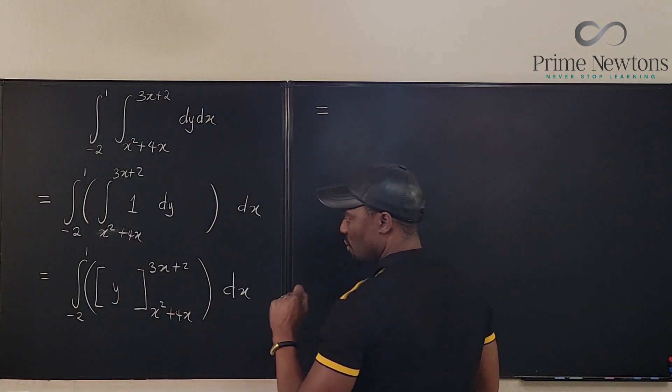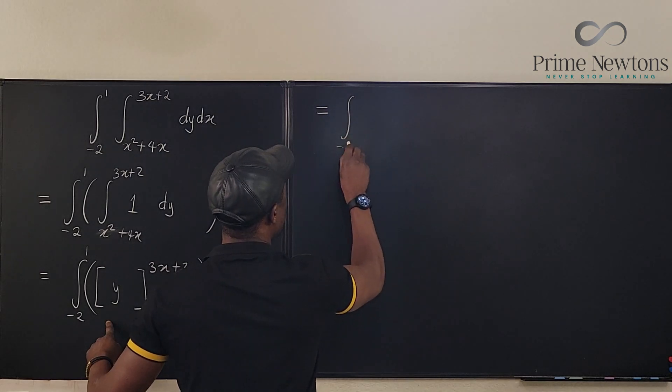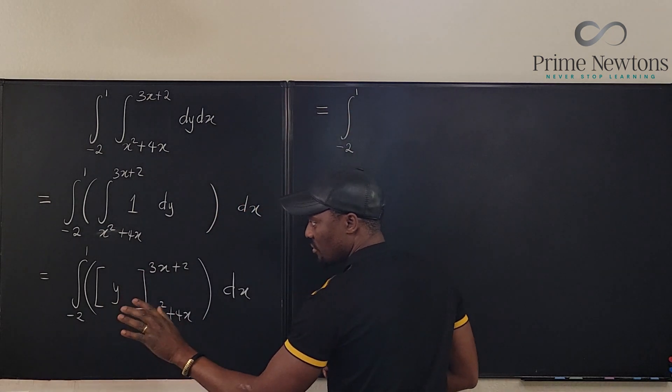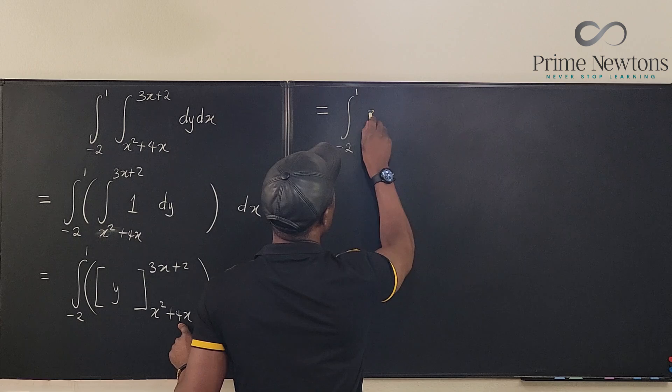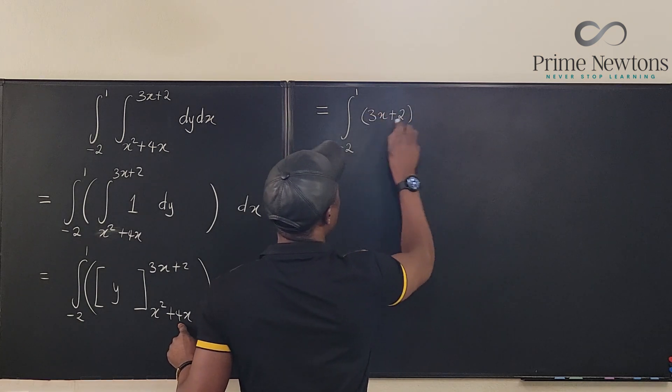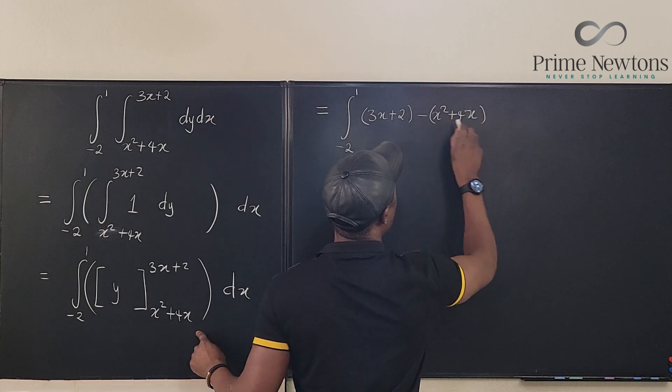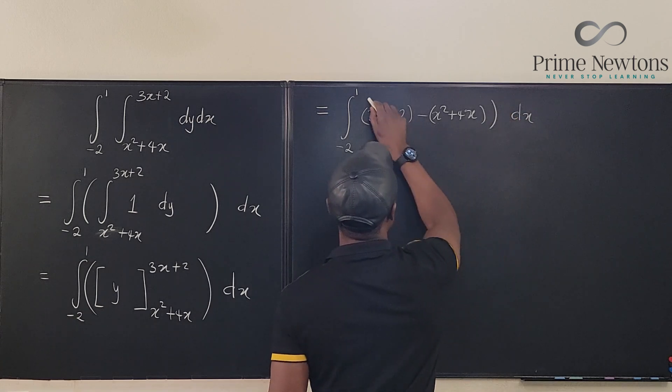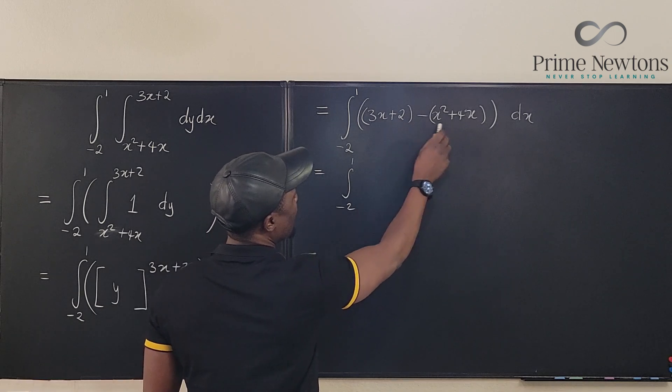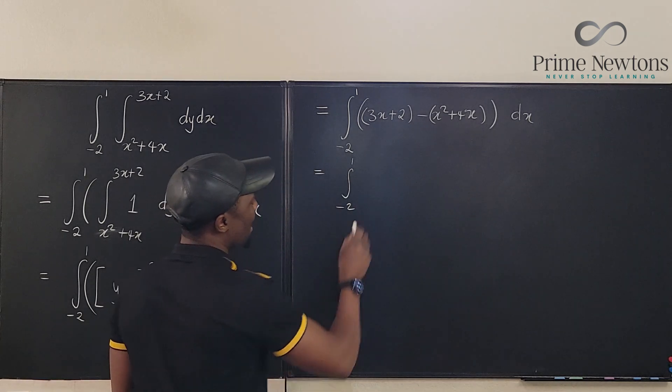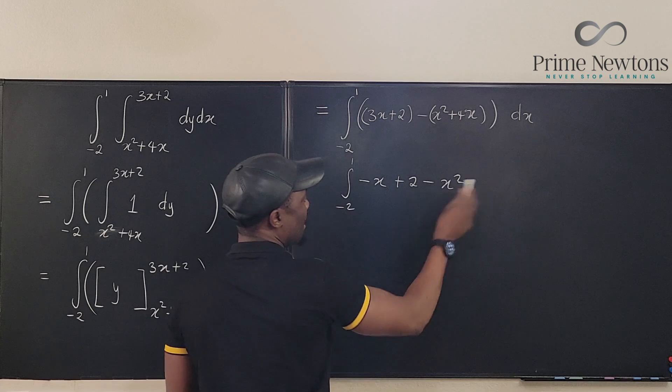So, this is going to be equal to, what do we have? We have, let's evaluate this. So, this is going to be equal to the integral from negative 2 to 1. Now, remember our normal integration strategy. It's going to be 3x plus 2 minus x squared plus 4x. So, we're going to have 3x plus 4x here. We still have, don't forget our dx. So, we'll end up with a polynomial in the middle. Negative 2, 1. Here, we're going to have 3x minus 4x. That's going to be negative x. So, we have negative x. Then you have 2 here plus 2. Then you have minus x squared. That's how you have it. dx.